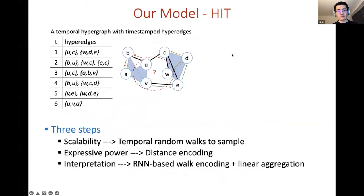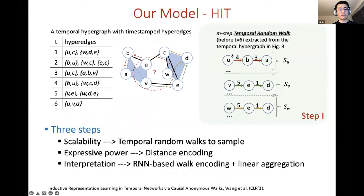Our model holds three key steps to address the three challenges. First, our model extracts information from the contextual structure around the three query nodes by using temporal random walks. For each query node a set of walks will be collected, and the length and the numbers of walks can be properly controlled so the model scalability overall can be well controlled.